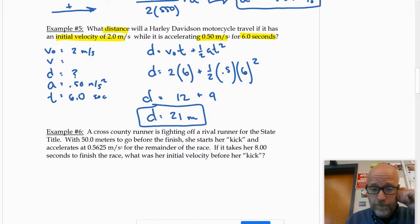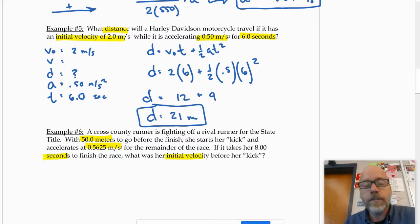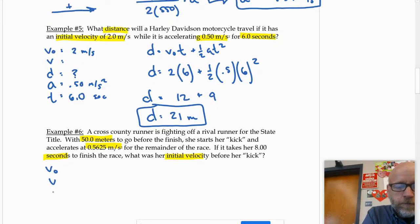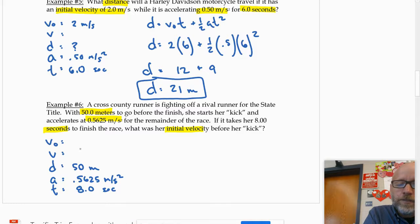Okay. Last one. We're almost there. A cross-country runner is fighting off a rival runner for the state title. With 50 meters to go before the finish, she starts her kick and accelerates at 0.5625 meters per second squared for the remainder of the race. If it takes her 8 seconds to finish the race, what was her initial velocity before the kick? Okay. Let's do it. V naught, V, D, A, T. Okay. Displacement was 50 meters. The acceleration is an oddly precise 0.5625 meters per second squared. It takes her 8 seconds. And the initial velocity is, oh, that's what we're looking for.